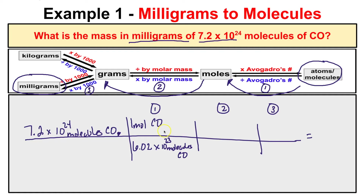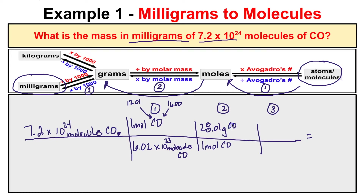We have to multiply by the molar mass of carbon monoxide. Looking at a periodic table, the molar mass of carbon is 12.01 and the molar mass of oxygen is 16.00. Adding these together gives us 28.01. So we know that one mole of carbon monoxide equals 28.01 grams of carbon monoxide. That's our second step.